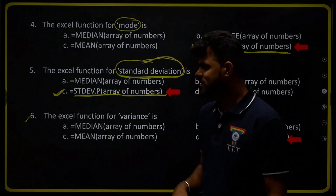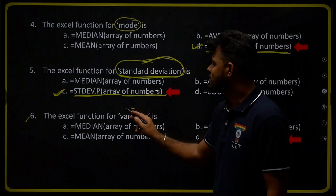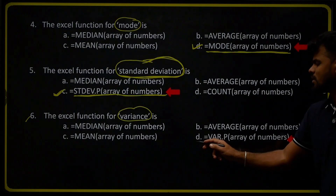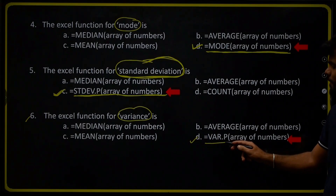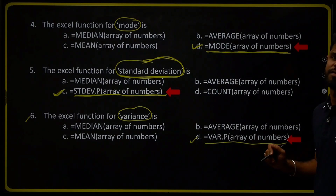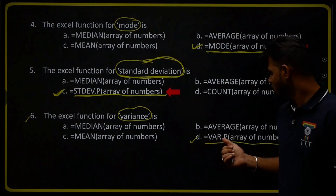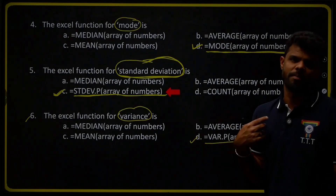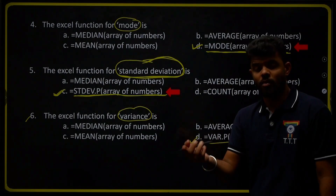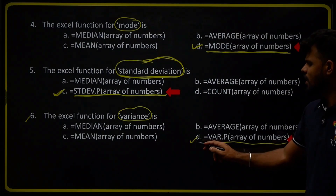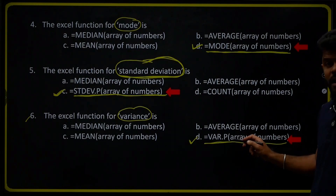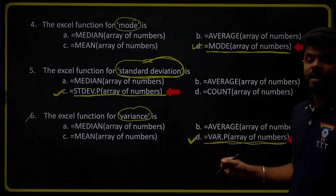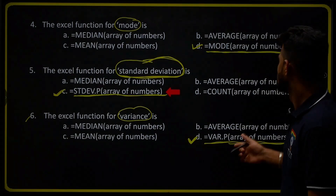Question number six: the Excel function for variance. For population variance use VAR.P, for sample variance use VAR.S, and for a general variance formula use VAR. Here variance is asked without specifying population or sample, so we use =VAR.P(array of numbers). Therefore option D is the right answer for the calculation of variance in Excel.